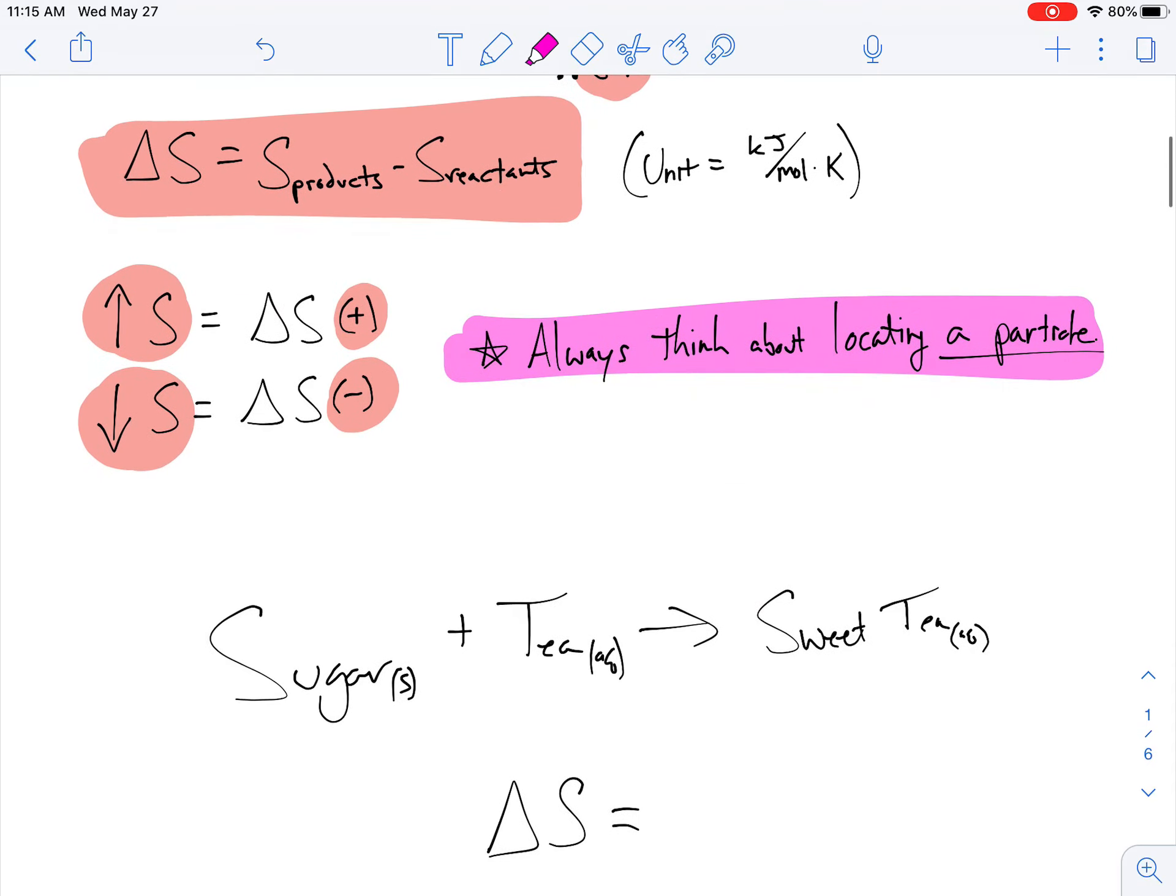Let's see if this makes sense. If we have some solid sugar, and we put it in some tea, and we get some sweet tea, would delta S be positive or negative? Is it becoming more difficult to locate a particle, or easier to locate a particle? If I combine them together, I mix them, it's becoming more difficult. If it's becoming more difficult to locate it, it's a positive value. So delta S would be positive.